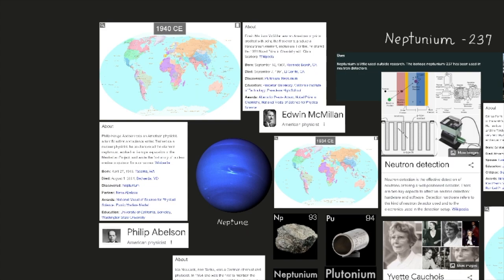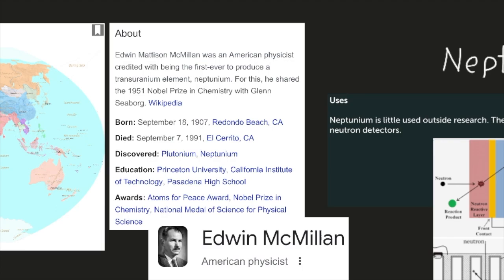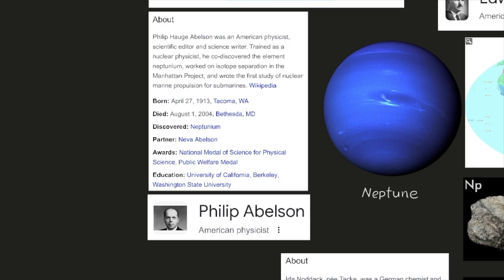Neptunium's discovery was in 1940 by Edwin McMillan and Philip Abelson. Edwin Madison McMillan was an American physicist credited with being the first ever to produce a transuranium element, neptunium. For this, he shared the 1951 Nobel Prize in Chemistry with Glenn Seaborg. Philip Hogg Abelson was an American physicist, scientist editor, and science writer. Trained as a nuclear physicist, he co-discovered the element neptunium, worked on isotope separation in the Manhattan Project, and wrote the first study of nuclear marine propulsion for submarines.